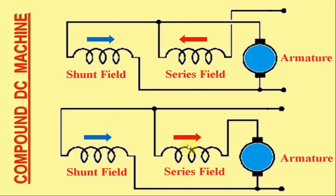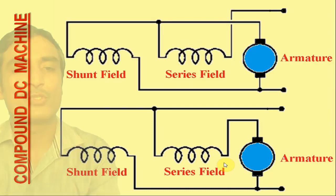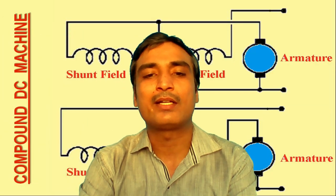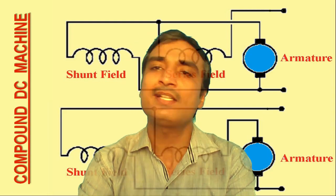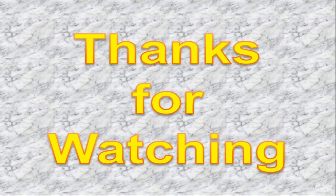On the other hand, in the long shunt compound DC motor, with typical field winding connections as depicted in the second figure, it can easily be observed that the direction of the current in the series field winding is identical to that in the shunt field winding. Consequently, the series field strengthens the shunt field, and therefore such a motor is said to be a cumulative compound DC motor. This is all about the classification of DC machines based on the methods of field winding excitation. Thanks for watching. Goodbye.